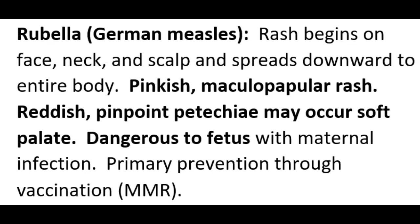The most devastating form of rubella is congenital rubella syndrome, occurring after maternal infection usually during the first 12 weeks of pregnancy. One of the most common manifestations is intrauterine growth retardation. The infant is usually born at low birth weight and continues to have failure to thrive in infancy; mortality is highest during the first year. Treatment is generally supportive and symptomatic, with the disease being self-limiting with resolution within five days. Exclusion from school or child care is recommended for seven days after the rash begins.